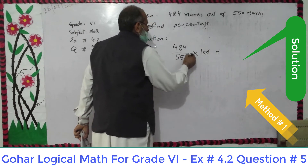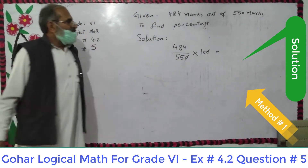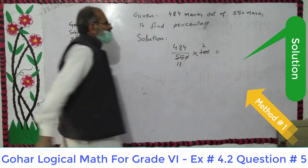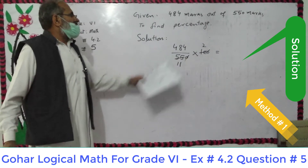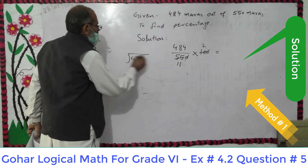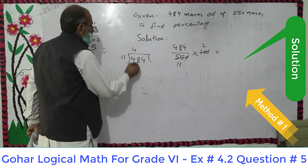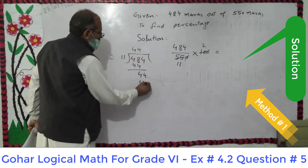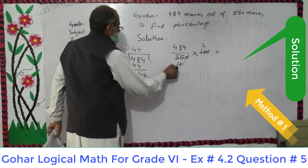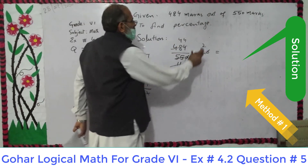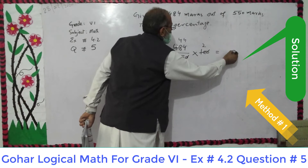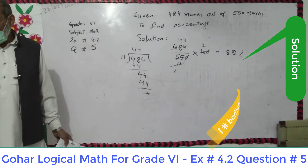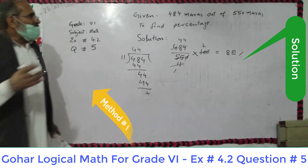You can see the zeros cancel. Then 5 and 11 give 55, and 5 and 2 give 10. Now we divide 484 by 11: 11 times 4 is 44, 11 times 4 is 44, so we get 4 times 2 equals 8. The answer is 88%. This is one method.